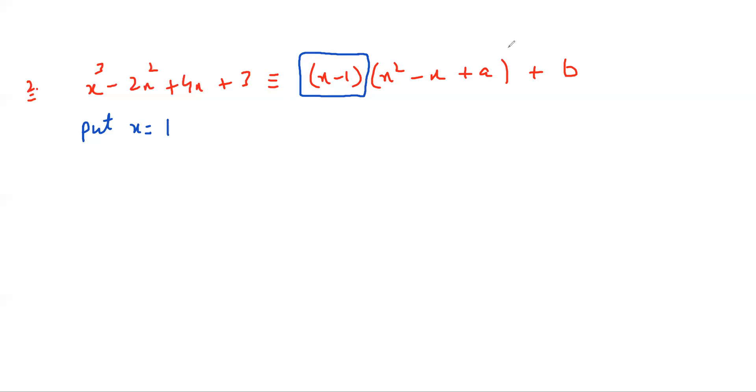If you put X equal to 1, all of this will be 0. Because this has become 0. So 0 into anything is going to be 0. So you have here 1 cube is 1 minus 2 plus 4 plus 3. That is equal to B. So your B is going to be 6. You get to the value of B.